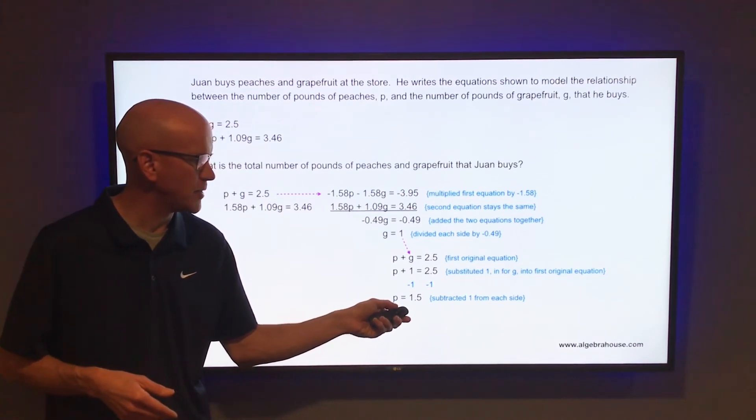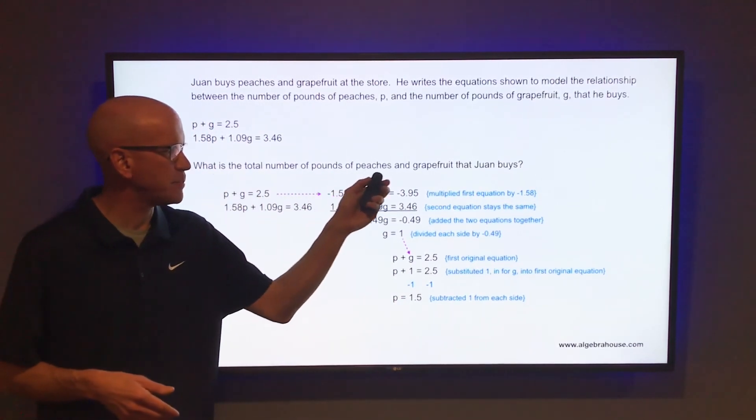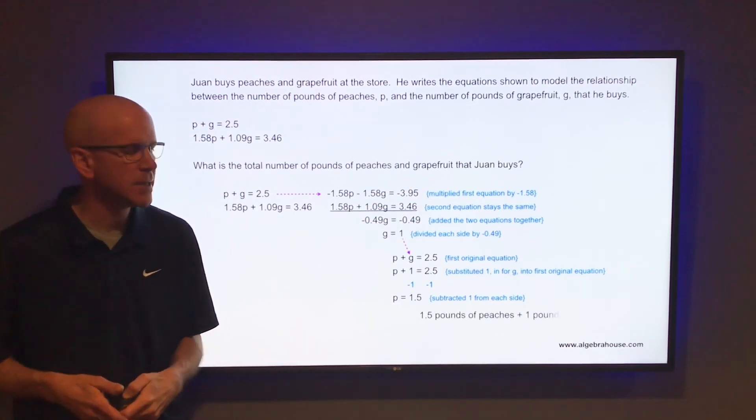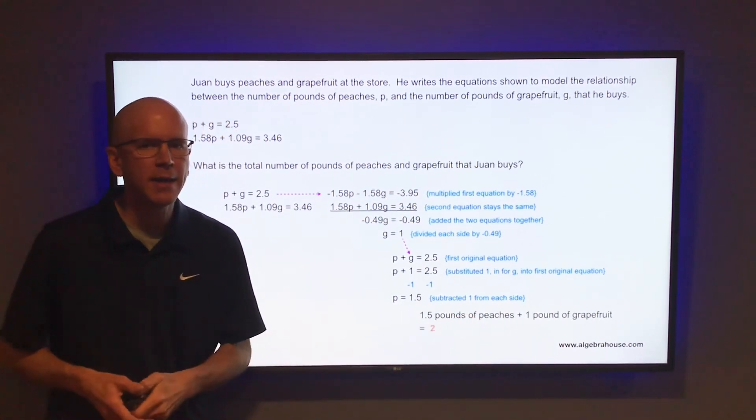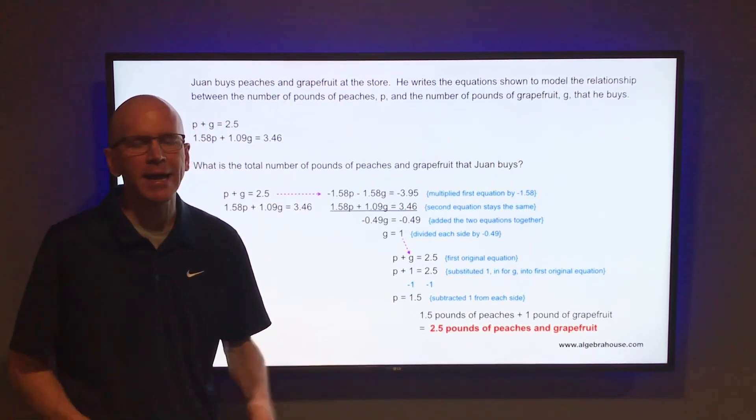So he bought 1.5 pounds of peaches, 1 pound of grapefruit. The question is, what is the total number of pounds of peaches and grapefruit that he buys? Just add those two together, 1.5 plus 1, and that is 2.5. So Juan bought 2.5 pounds of peaches and grapefruit.